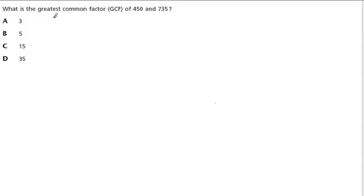Welcome to a problem about the greatest common factor of these two rather large numbers. We've got four choices, and since it is a multiple choice problem, let's think about this. Since five goes into both of these numbers — remember, if your number ends in five or zero, five goes into it — it's a factor of that number.